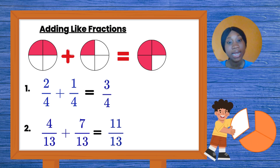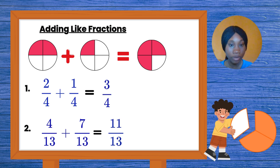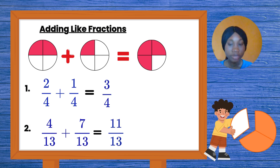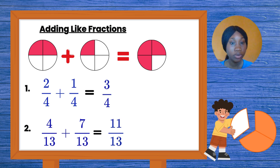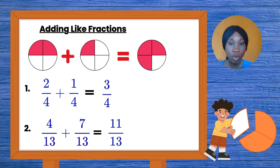So let's start. Let's look at how to add like fractions. Now, like fractions are fractions that have the same denominator — the denominator is the number at the bottom — so that means they have the same numbers at the bottom. You can see I have this circle: I divided it into four parts and shaded two out of four, so that is two over four. I got another circle, divided it also into four parts, and this time I shaded one out of four, so the fraction of that is one over four.